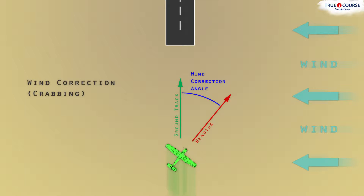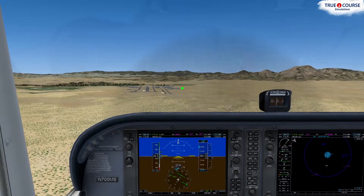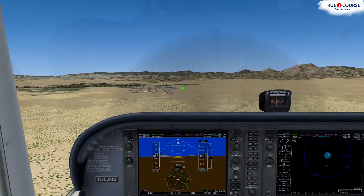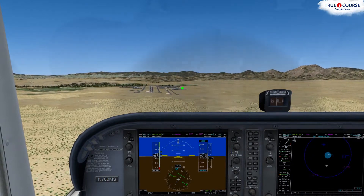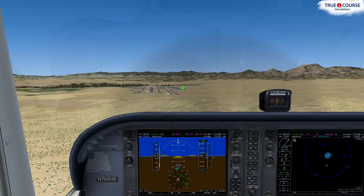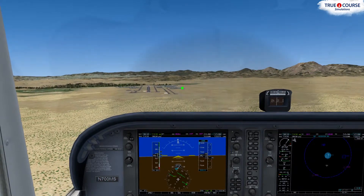You used basically the same procedure to compensate for wind a few lessons ago when practicing ground reference maneuvers. The heading adjustment you'll need to make is called a wind correction angle, and you'll want to apply enough of a wind correction angle that the aircraft tracks straight down the centerline. This will result in the nose being pointed into the wind and a ground track straight towards the runway. The act of applying a wind correction angle so the aircraft tracks a specific ground track is called crabbing. You'll know you're crabbing correctly on final if the runway is stationary and not sliding to either side of the window.